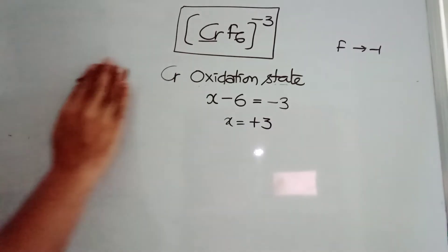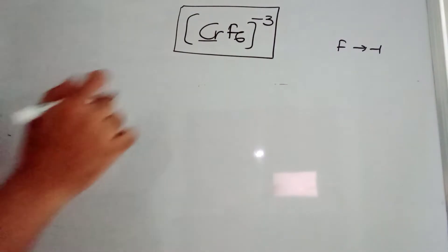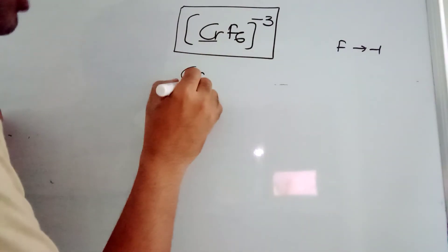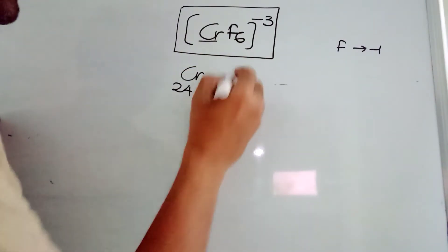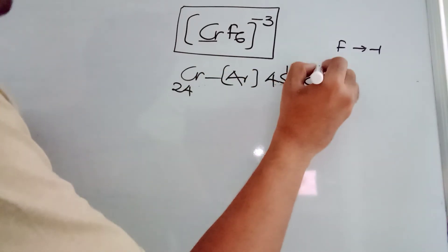After this, you need to write the chromium electronic configuration. Atomic number of chromium is 24: argon, 4S1, 3D5.